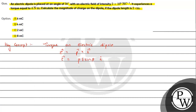From the question, the electric dipole is placed at angle θ = 30 degrees, and the electric field and torque values are given. Substituting: torque = PE sin30°. The value of sin30° is 1/2. So we have 4 = P × 2×10⁵ × (1/2), giving us P = 4×10⁻⁵.